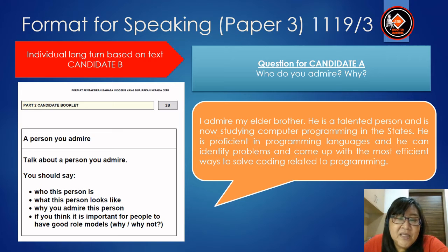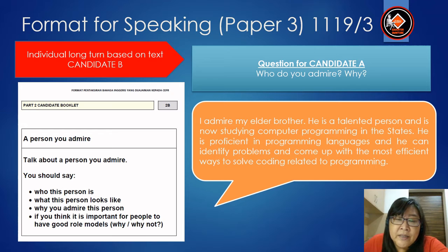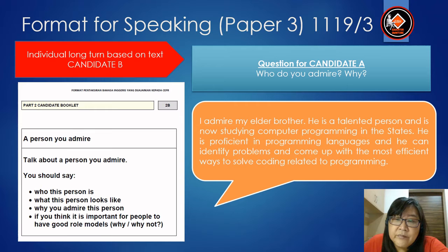After Candidate B has finished his or her explanation, the question will be asked to Candidate A: Who do you admire? Why? You can answer: I admire my elder brother. He is a talented person and is now studying computer programming in the States. He is proficient in programming languages and can identify problems and come up with the most efficient ways to solve coding related to programming.